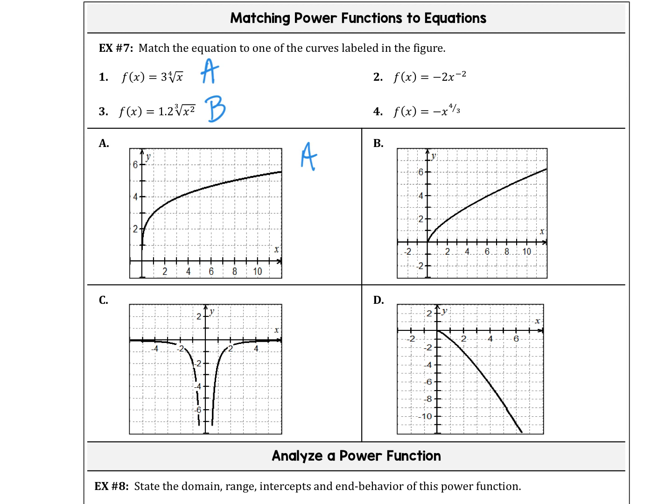That leaves C and D for functions 2 and 4. They're both negative — both in the bottom. Function 2 has a negative even power, which corresponds to C. Function 4 has a negative one-third power. Notice that the negative in front flips it over, much like a cubic flipped. So function 4 goes with D.